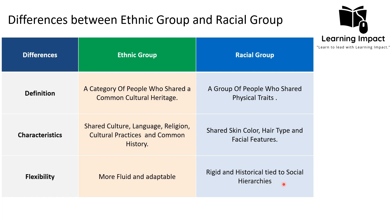In contrast, the racial group is rigid and historically tied to social hierarchies. It is not possible to change one's racial group, as it is an ascribed status. An individual cannot change their skin color and other biological characteristics because these are rooted in genetics. That is why racial group is considered more rigid and not adaptable — it is historically tied to social hierarchies, as seen in concepts like imperialism, colonialism, and white supremacy.